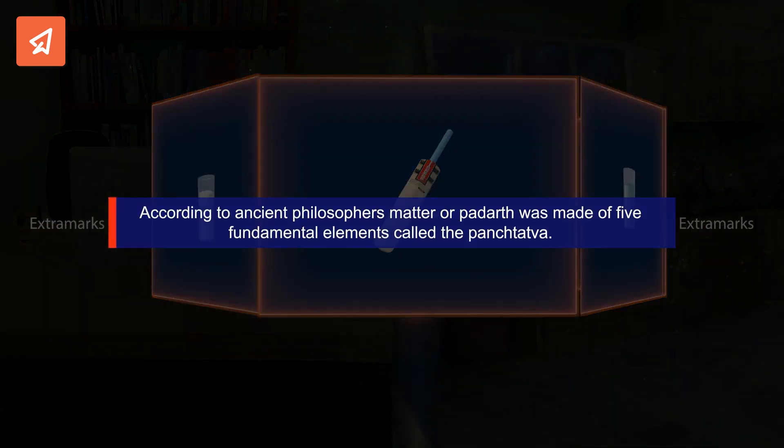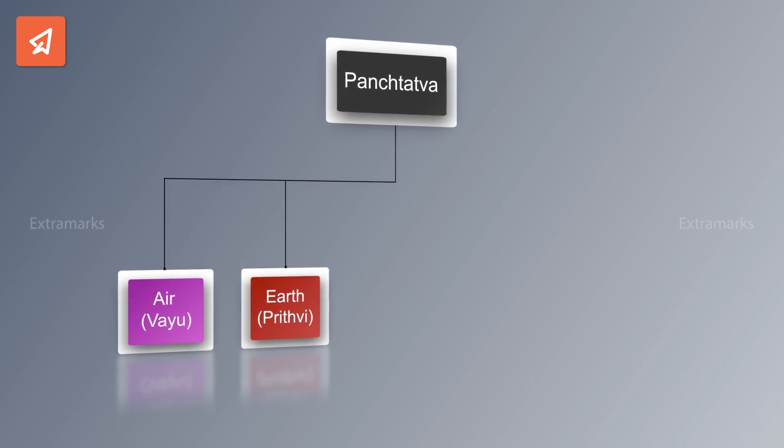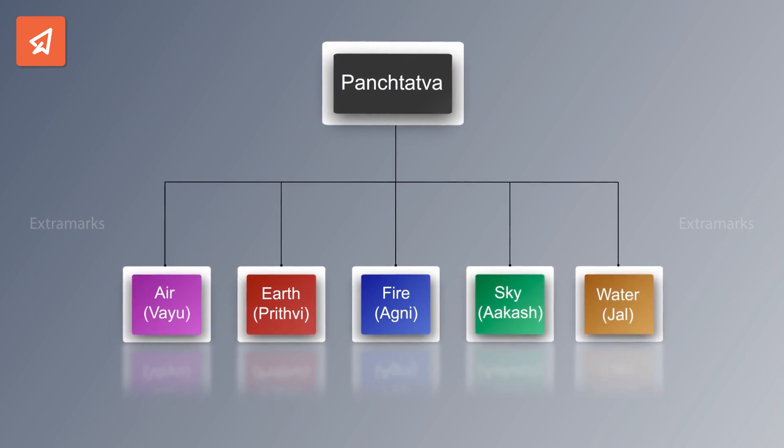Ancient philosophers believed that matter or padar was made up of five fundamental elements called the Panchatatva. Air means Vayu, Earth means Prithvi, Fire means Agni, Sky means Akash, and water means Jal.